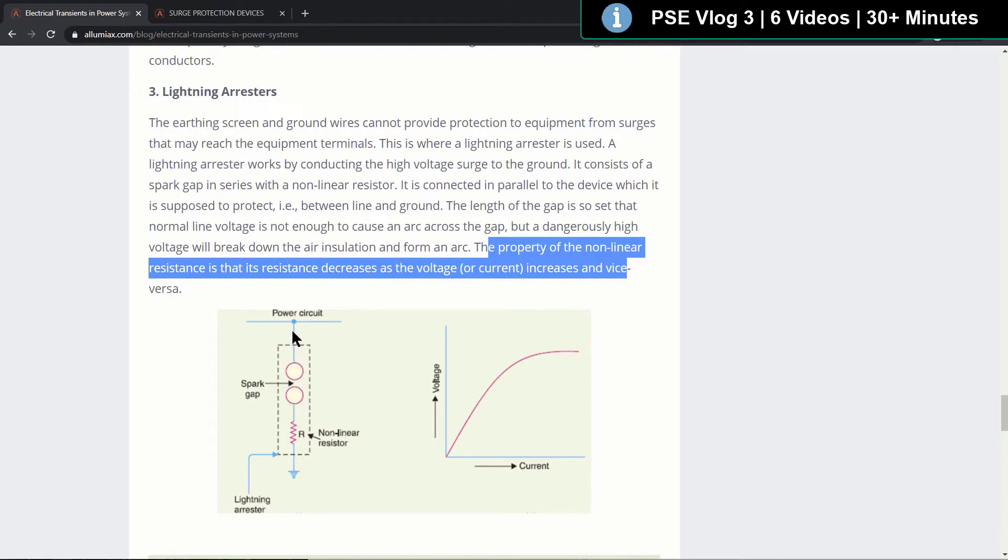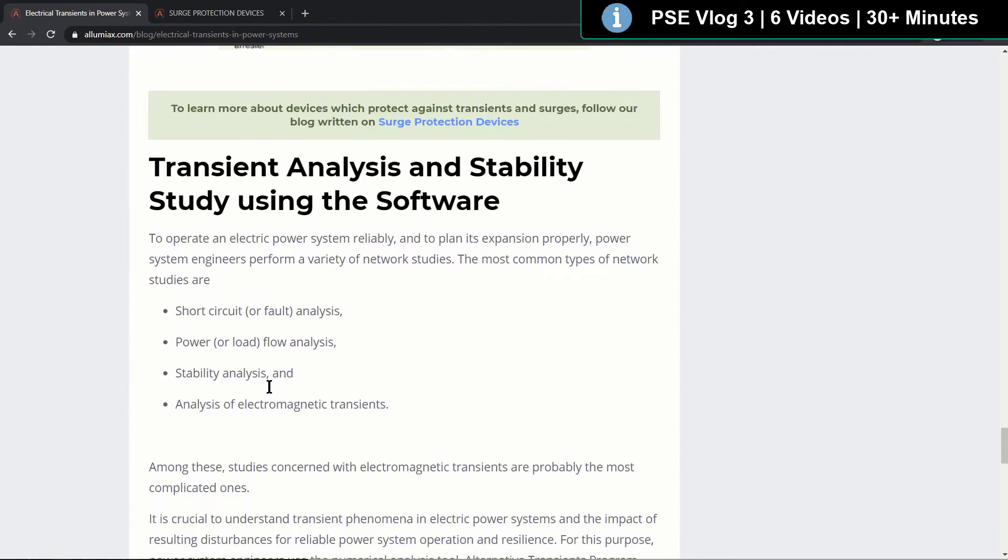So when the voltage increases, the resistor decreases significantly, and so the lightning or the transient that's produced by lightning will arc across and then it goes to ground directly. And so it prevents damage to the equipment itself.